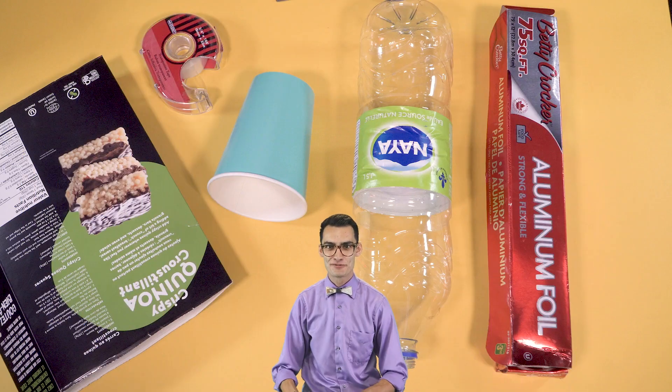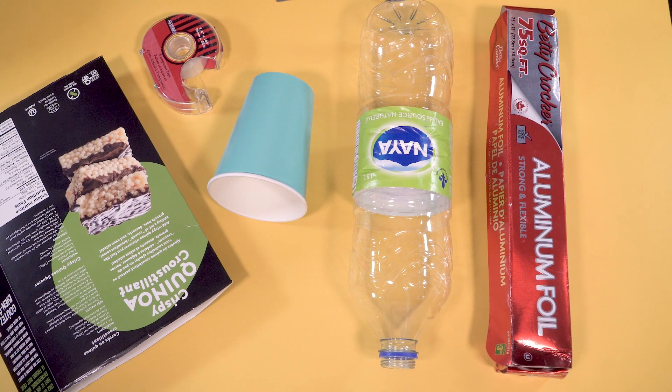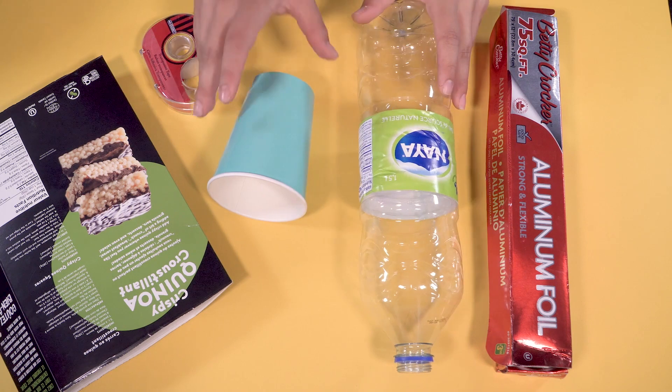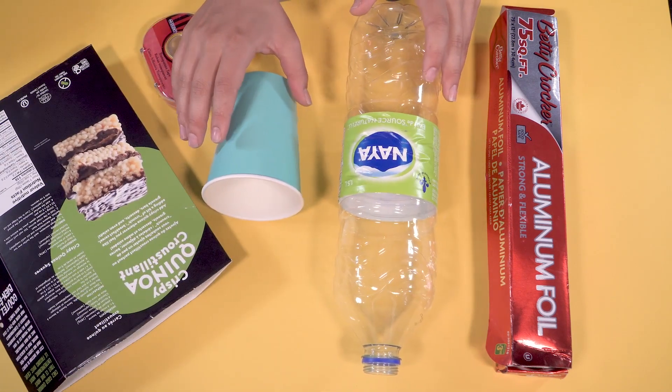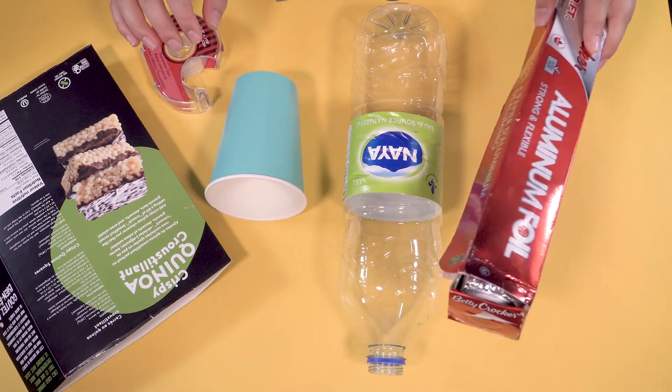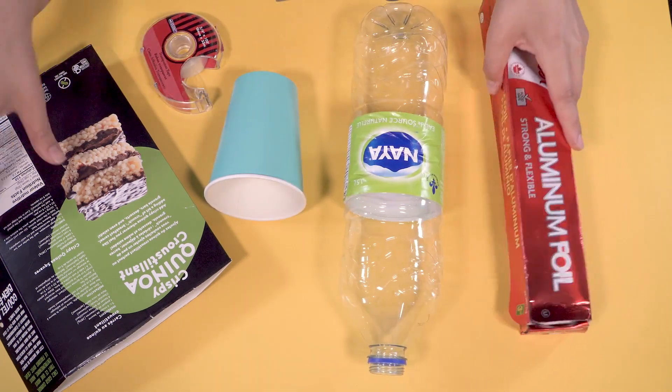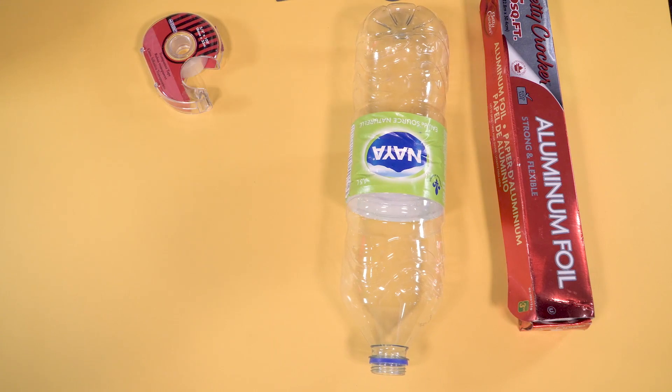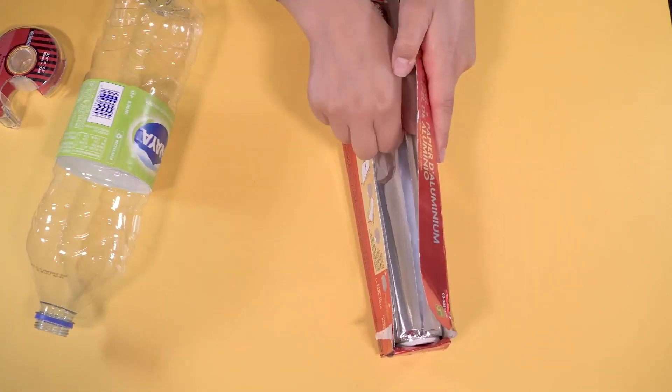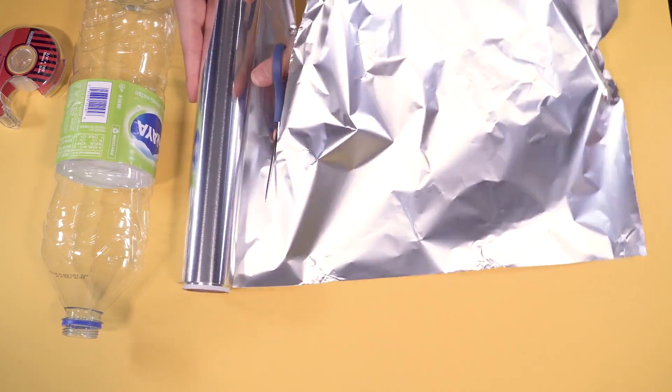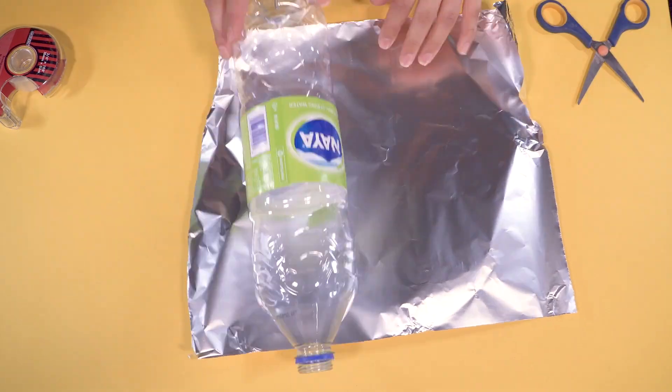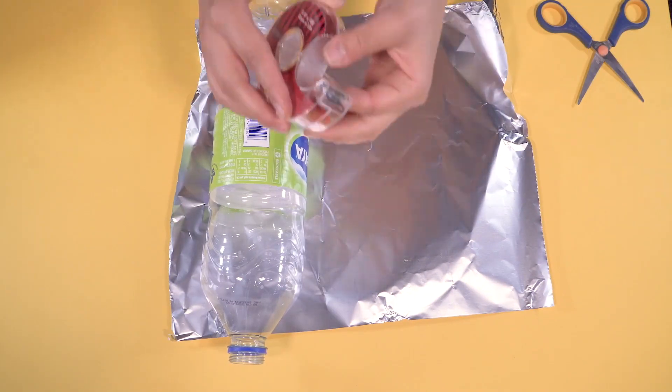Now it's tin foil time. Grab your two bottles, your cardboard, and your paper cups. These are all the components of your jetpack. We will need to cover all of them in tin foil. Let's start with the bottles. Roll them in tin foil. Fix it in place using your tape.